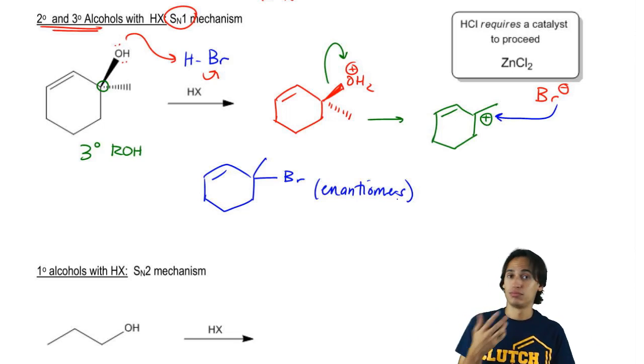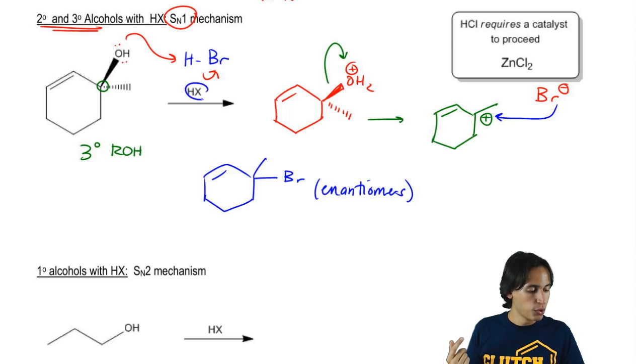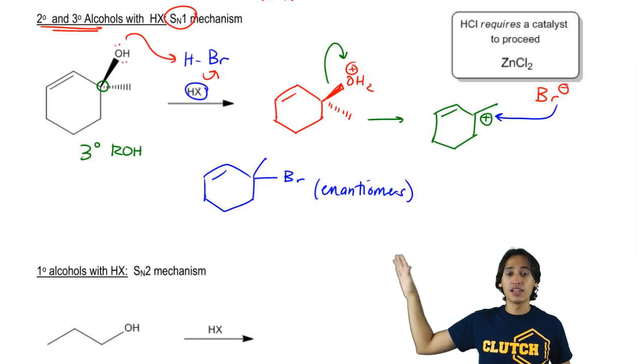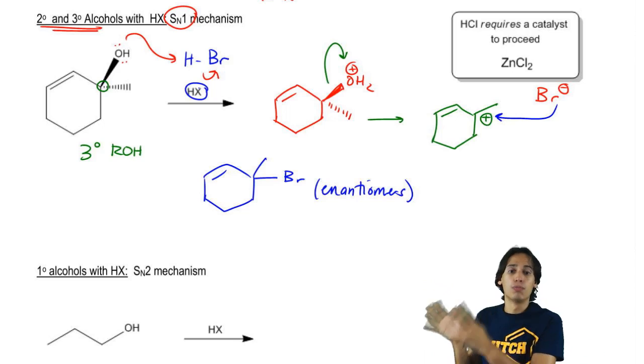So now you might also be wondering, Johnny, what was the point of this? Well, I'll tell you the point. The point is that alcohol wasn't going to do anything. It was just going to sit there forever. So by reacting it with HX, what we were able to do is turn it into an alkyl halide which is much more convertible. Alkyl halides are much more functional. They can do a lot more things. So I just made my alcohol more functional by turning it into an alkyl halide.